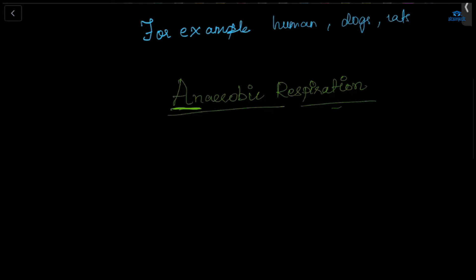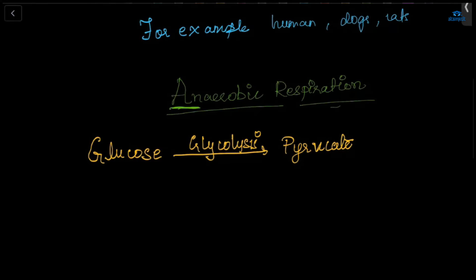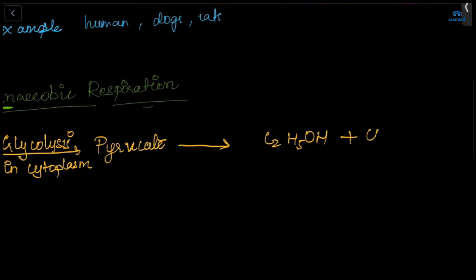The breaking down of glucose to pyruvate is called glycolysis, which we discussed in the previous class. Glycolysis takes place in the cytoplasm, and after that, pyruvate is again broken down into ethanol, carbon dioxide, and ATP.